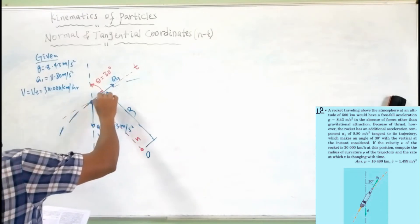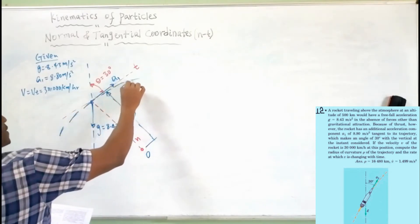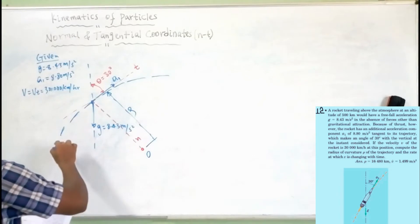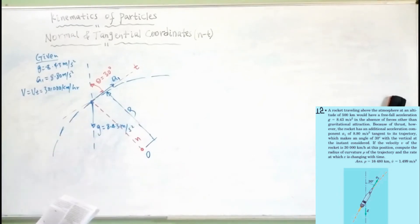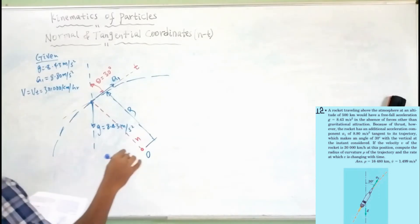We need to find the radius of curvature of the trajectory, and the rate at which V is changing with time — that is, the tangential acceleration.